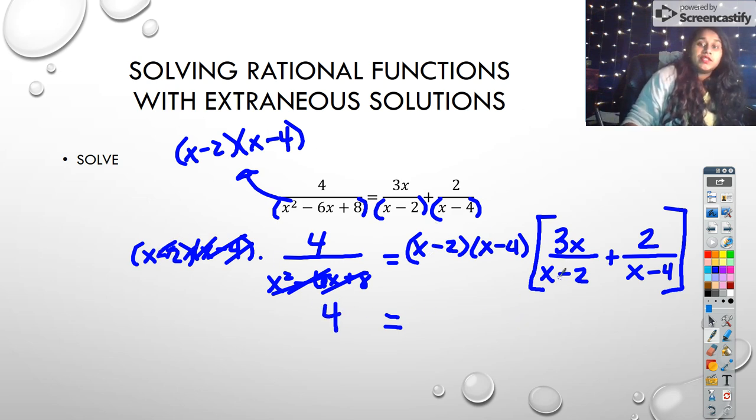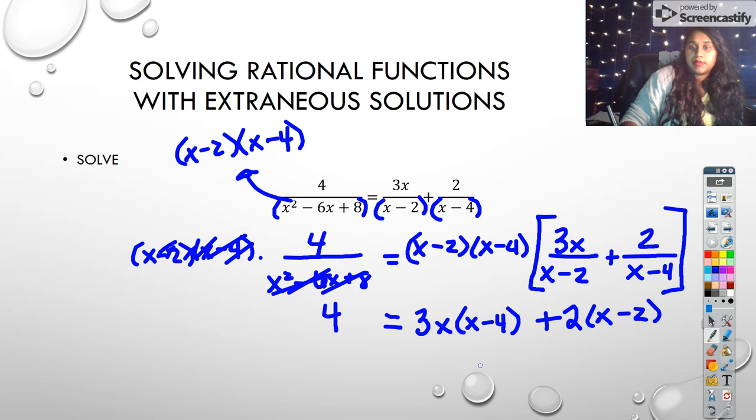Now over here in this first set, I could cross out x minus 2, but I wouldn't be able to cross out the x minus 4. So I'm left with 3x times x minus 4 plus. And then on the right over here, 2 over x minus 4. Well, I would cross out the x minus 4s, but I couldn't lose the x minus 2. So that would be 2 times x minus 2.